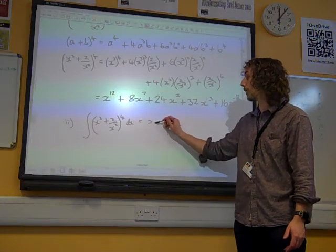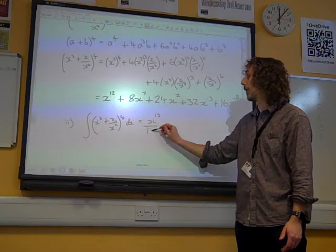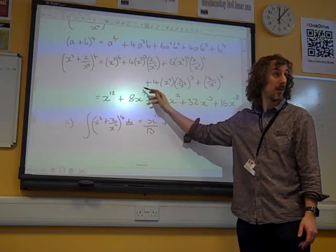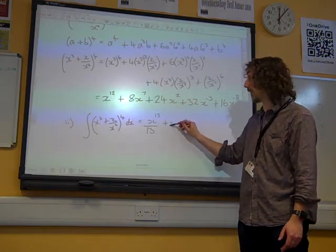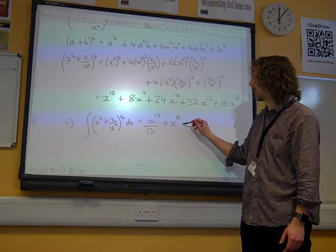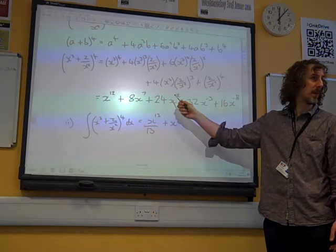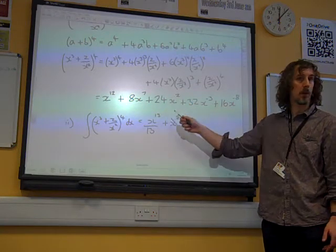So we add 1 to the power and divide by the new power. Add 1 to the power and divide by the new power, the 8 is going to cancel out there, isn't it? So that's x⁸. Add 1 to the power, makes it x³. 24 over 3 is 8.